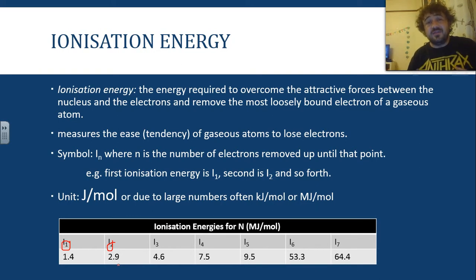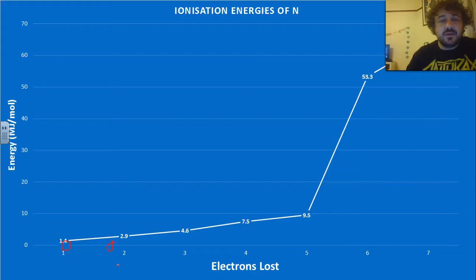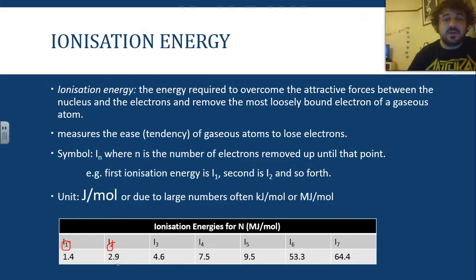Kilojoules per mole, we're mostly dealing with metals. Megajoules per mole, that's when we get into the non-metals. So, here's the ionization energy for nitrogen, and as you see, it gets higher and higher and higher, the more electrons you're losing.